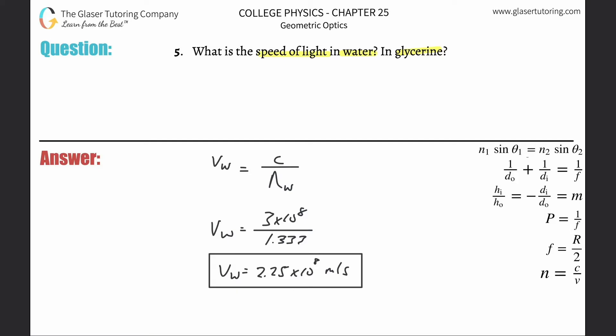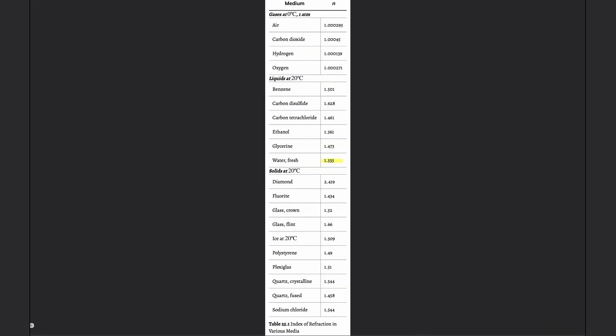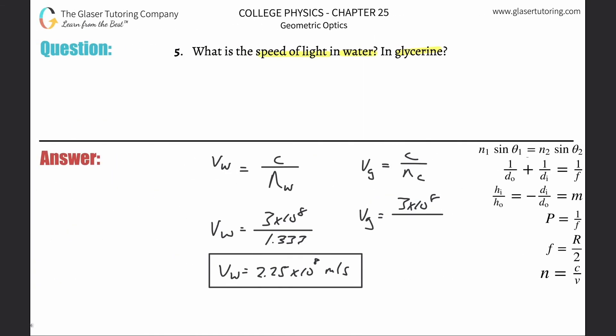Now we can do the same thing for glycerine. So this is going to be the velocity in glycerine, whatever, is equal to c over the index of refraction of that medium. This is going to be three times ten to the eight. What was the value of glycerin again? One point four seven three. Well, since I can't remember anything anymore, it was, yeah, okay, good. All right, one point four seven three. So this is one point four seven three.